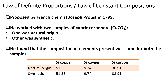The table below shows his findings. The percent of copper in both the natural and synthetic samples was found to be 51.35%. The percent of oxygen in both samples was 9.74%, and the percent of carbon in both samples was 38.91%.